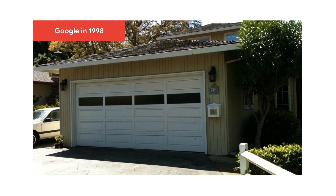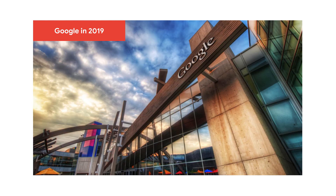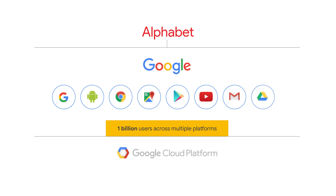I'm sure most of you are aware that Google started in 1998 in a small garage. Today, Google has more than 70 offices across 50 countries. For the past 20 years, Google has been working hard to organize the world's information and make it universally accessible and useful. We've created products such as Search, Android, Chrome, Maps, Play, YouTube, Gmail, and Drive, all now with over a billion users.